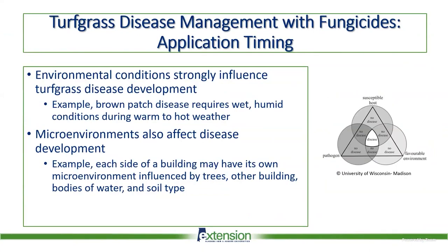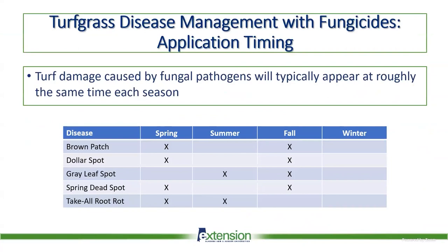Environmental conditions strongly influence turfgrass disease development. Brown patch requires wet, humid conditions during warm to hot weather. Dollar spot likes more overcast conditions with prolonged periods of leaf wetness. Micro-environments can affect disease development — one side of a building may have its own micro-environment influenced by trees, other buildings, bodies of water, or soil types, making spot treatments sometimes appropriate. A summary of disease timing: brown patch, dollar spot, and spring dead spot occur in spring and fall; gray leaf spot in summer and fall; take-all root rot in spring and summer. Knowing when diseases typically occur helps determine if a preventative application is needed.